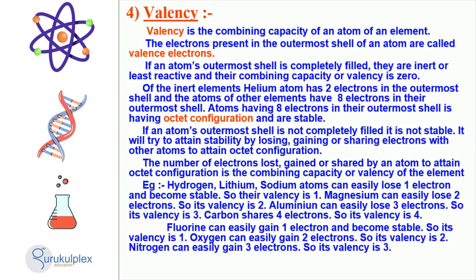Atoms become stable when they form bonds with other atoms. This process is called valency and is determined by the number of electrons in an atom's outermost shell. Elements such as helium, which have two electrons in its outermost shell, are considered inert, while atoms of other elements with eight electrons in their outermost shell form an octet configuration. This octet configuration makes them stable. On the other hand, if an atom's outermost shell is not completely filled, it seeks stability by either losing, gaining, or sharing electrons with other atoms. The number of electrons lost, gained, or shared by an atom to form the octet configuration is the element's valency.